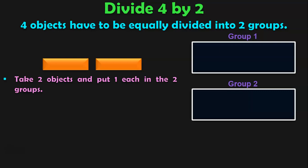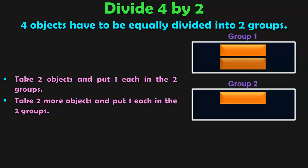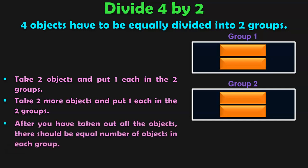Take 2 objects and put 1 each in the 2 groups. Then again, take 2 more objects and put 1 each in the 2 groups. After you have taken out all the objects, there should be equal number of objects in each group.